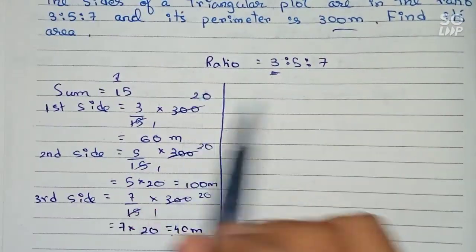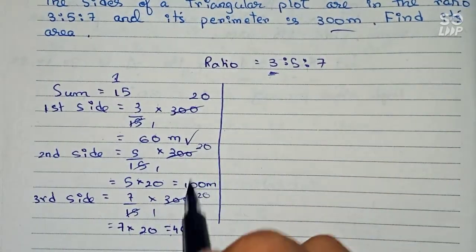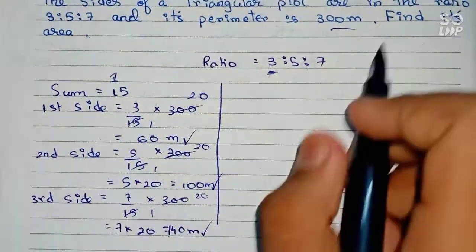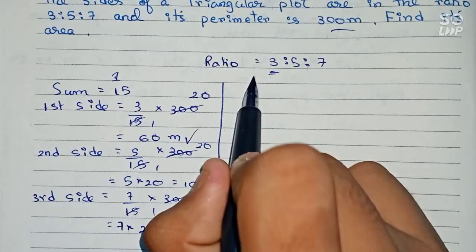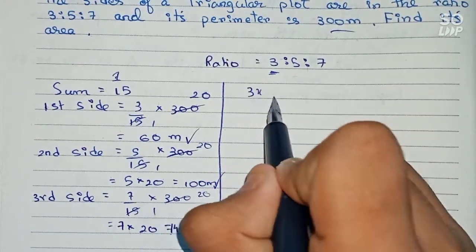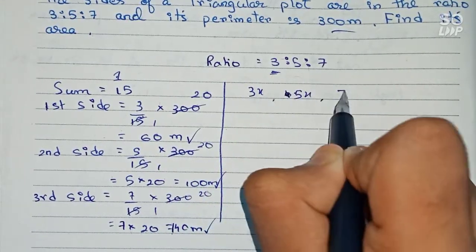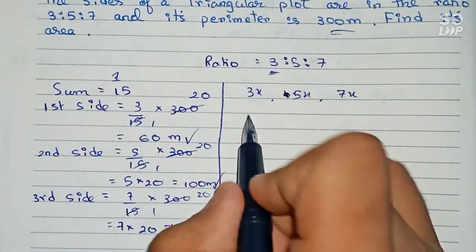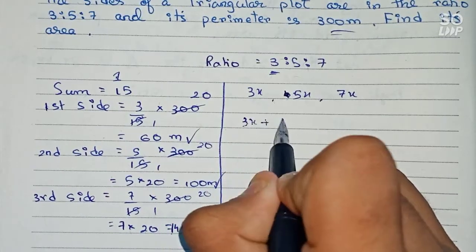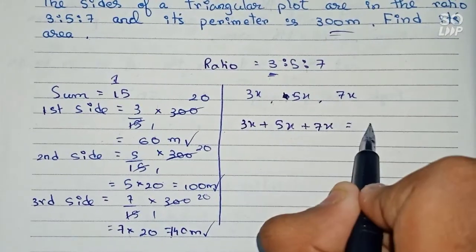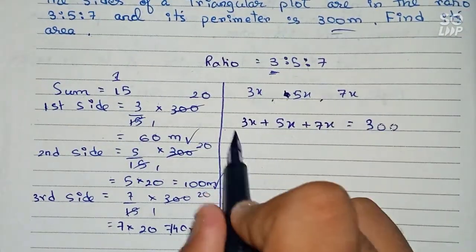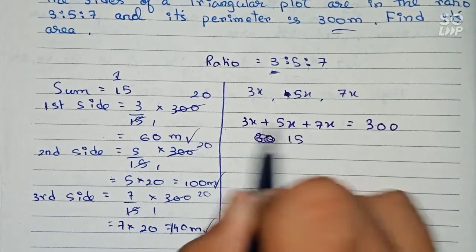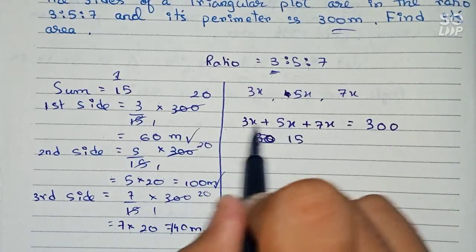So from Process 1, the three sides are 60 meters, 100 meters, and 140 meters. Now in Process 2, we take the three sides as 3x, 5x, and 7x. We know that the sum of the three sides equals the perimeter, which is 300. So 3x plus 5x plus 7x equals 300.